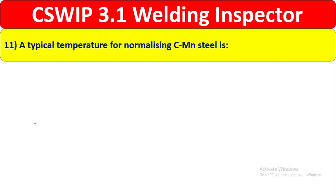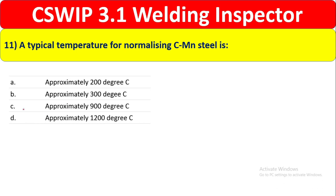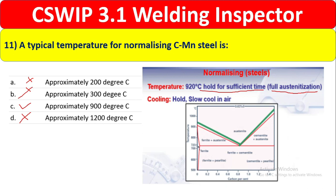Question 11: A typical temperature for normalizing carbon manganese steel is? Normalizing involves heating steel to approximately 920°C, holding for sufficient time, then cooling in air. The correct answer is approximately 900°C. This completes all 11 questions in this video.